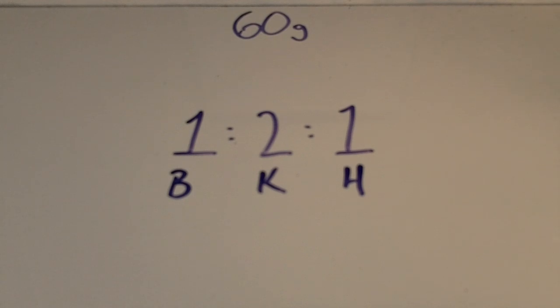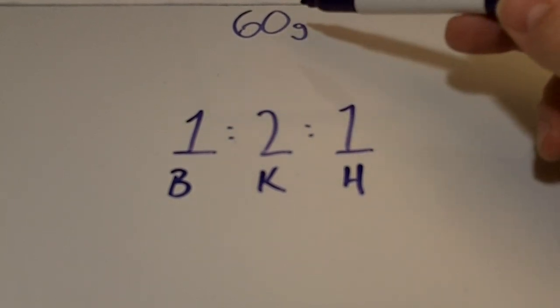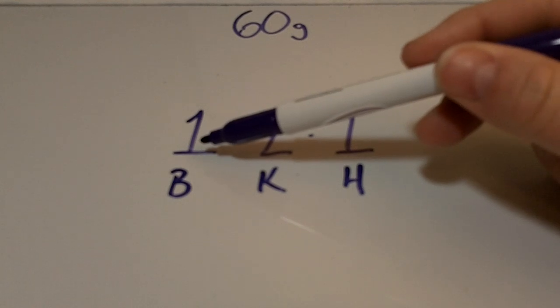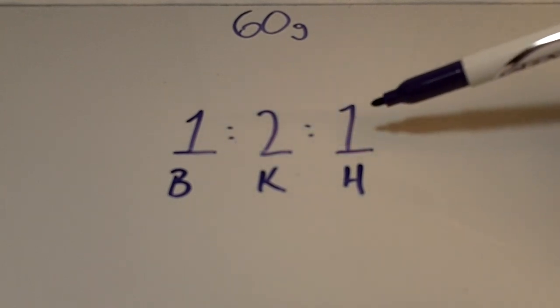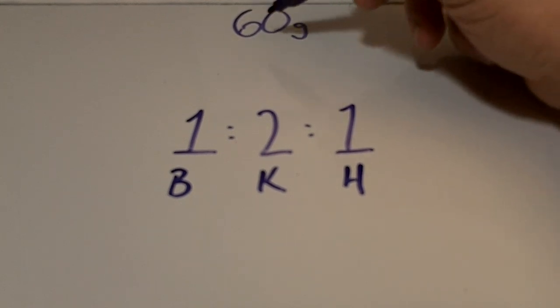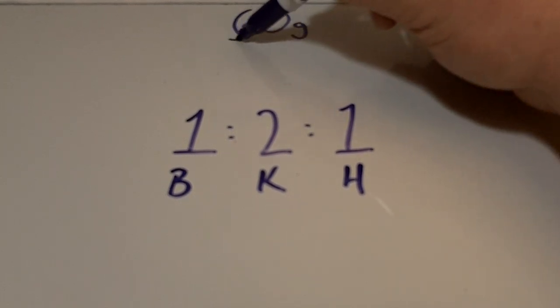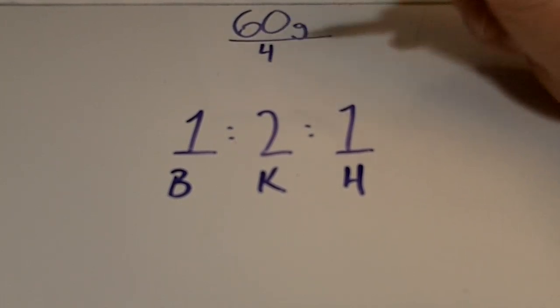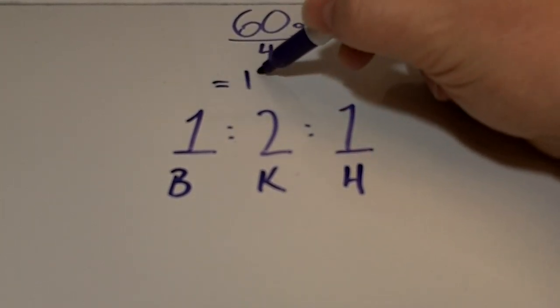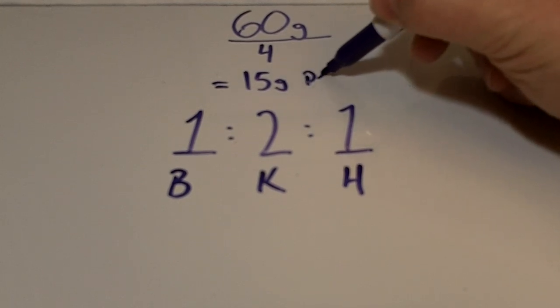So what that means is when we're done, we're going to have a mixture of one part betamethasone, two parts ketoconazole, and one part hydrocortisone. That's a total of four parts. So we need to divide 60 by four, which gives us 15 grams per part.